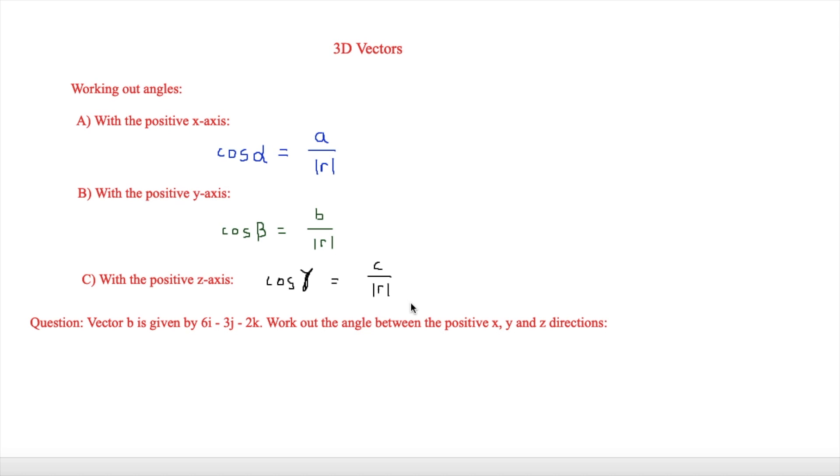Now that will make more sense when we look at this particular question. So it says vector b is given by 6i minus 3j minus 2k. So work out the angle between the positive x, y and z directions. So we'll start off by working the angle between the positive x direction, and in order to do this we will be using this one here.